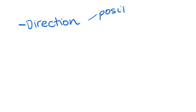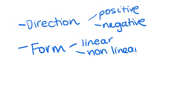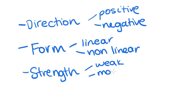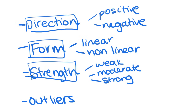When you're looking at a scatterplot and interpreting it, there are four things you should look for. The first is direction, which could be positive or negative. The next is form, which would be either linear or nonlinear — linear being those straight-line graphs we're used to seeing. The next is strength, which could be weak, moderate, or strong. And the last is outliers — whether there are any outliers in the scatterplot that you can see.